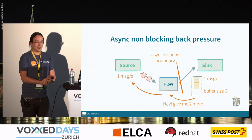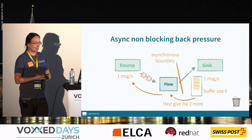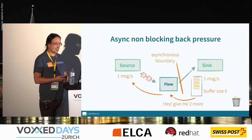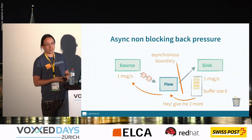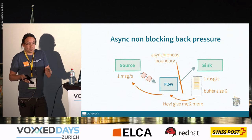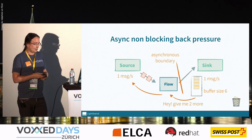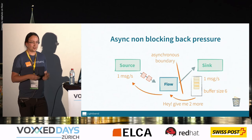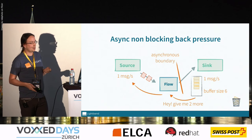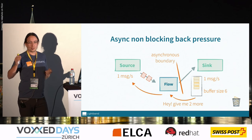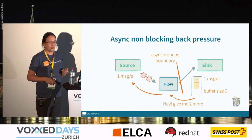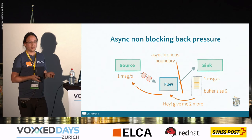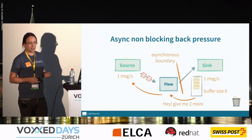This is what the Reactive Streams specification solves with asynchronous non-blocking back pressure. The downstream always signals demand upstream and never signals more demand than it can handle. So if the sink has a buffer of size six, it knows it can ask for two more elements upstream because it has space for those. It sends demand upstream saying 'I want two more elements,' and the source can only produce elements for which it has received demand. With a slow consumer, we back pressure all the way to the producer and force the producer to deal with it — for example, reading from a database at a slower pace.